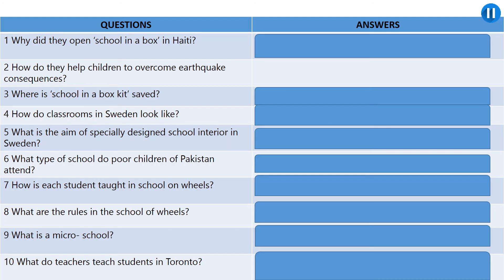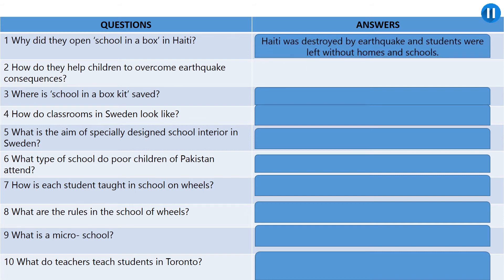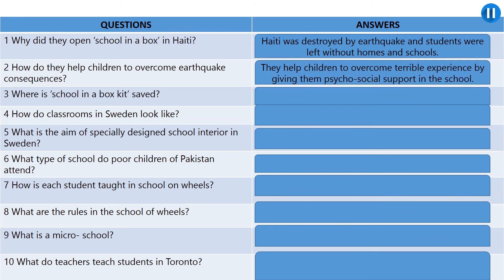Let's check your answers. Question number one: why did they open School in a Box in Haiti? Haiti was destroyed by an earthquake and students were left without homes and schools. Question number two: how do they help children to overcome earthquake consequences? They help children overcome the terrible experience by giving them psychosocial support in the school. Question number three: where is the School in a Box kit saved? It is saved in a specially designed metal box. Question number four: how do classrooms in Sweden look like? Classrooms are designed like open space.